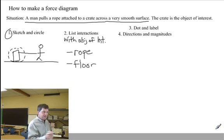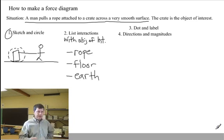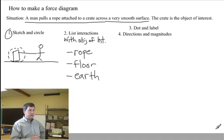Anywhere near the surface of the Earth, the force that we often talk about as gravity exerts a pull on that crate downward. Let's see. Anything else pushing or pulling? No. Step two is complete. We've got three interacting objects.